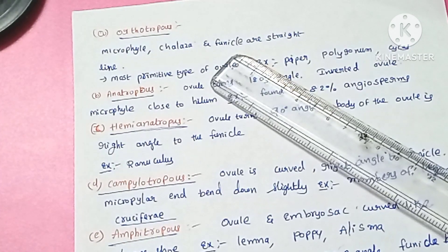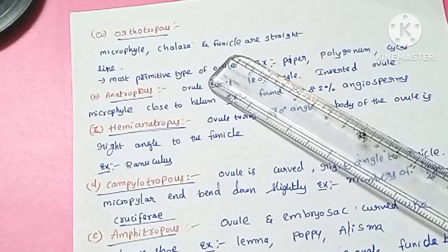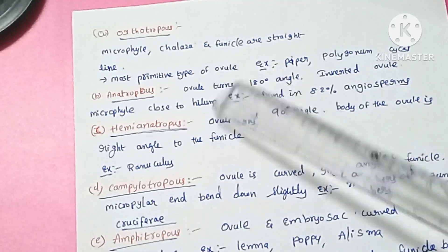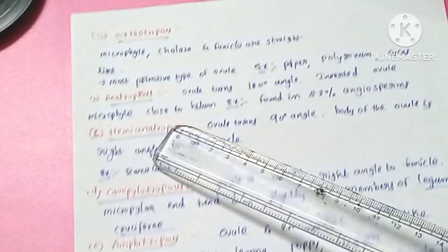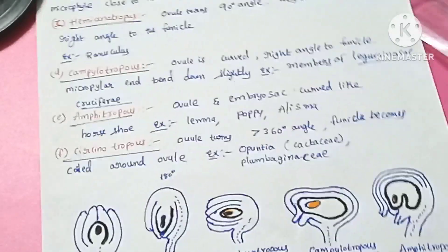In the orthotropous ovule, the micropylar end, chalazal end, and funicle are all in one straight line. It is considered the primitive type of ovule.